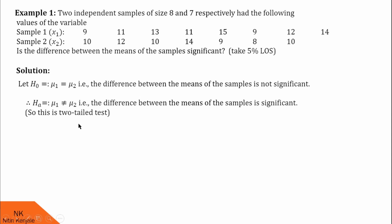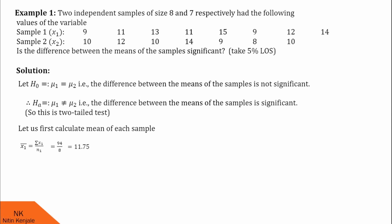Now we proceed for the test statistic. For that, we need the means of each sample. So let us calculate the mean of x1, given by summation x1i divided by n1. When I calculate this, I found x1 bar is 11.75. Similarly, x2 bar can be calculated as summation x2 divided by n2, and I found it is 10.43.